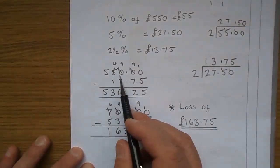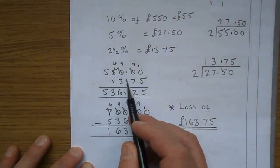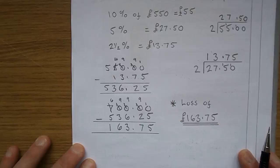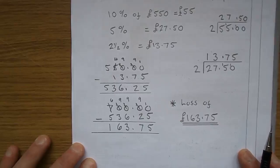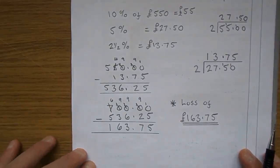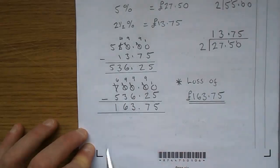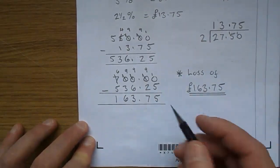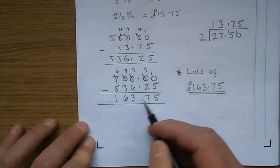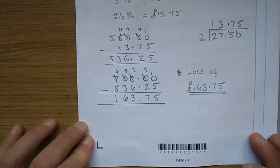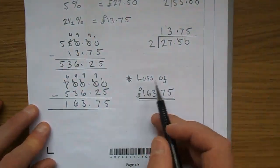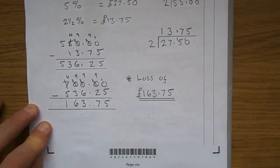So she sold them for £550, but she's got to pay £13.75, so she eventually sold them for £536.25, and the question was, how much loss did she make? So she bought them for £700, that's in the very first line up above, take away the £536.25, and a lot of cancelling out here, £163.75. Answer the question, she made a loss of £163.75.